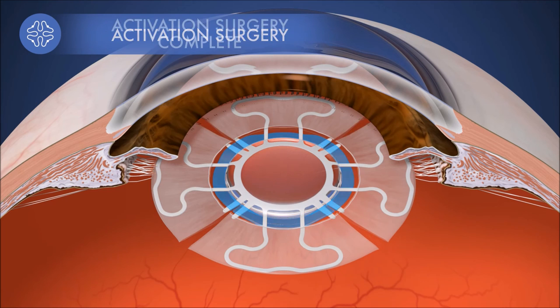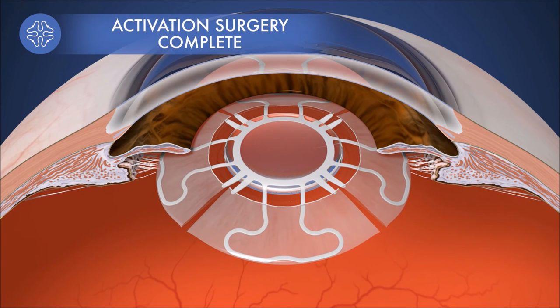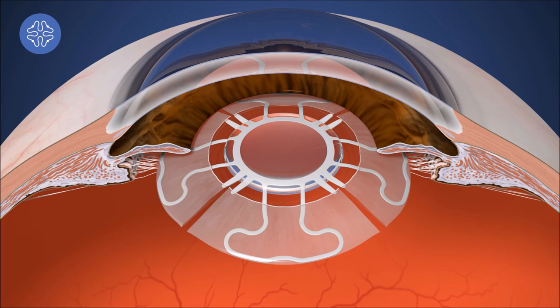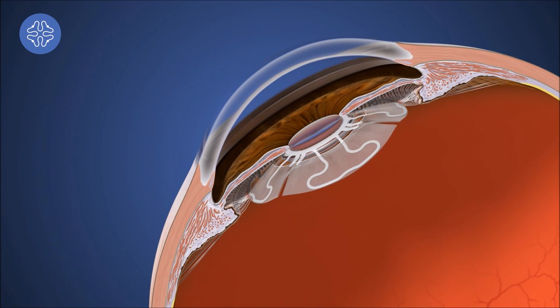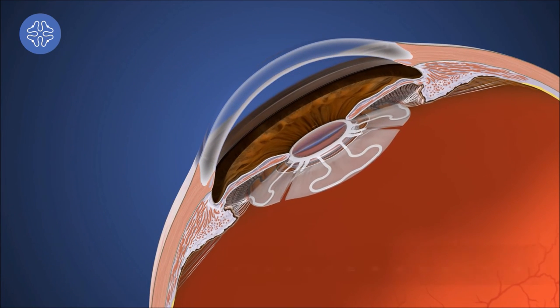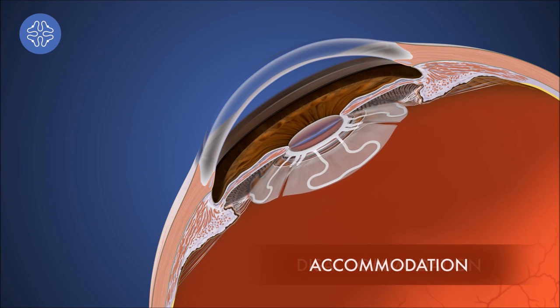After activation, the device will vault forward. Now that the IOL has been activated, it will mimic the movement of the natural lens by flattening out during disaccommodation and vaulting forward during accommodation.